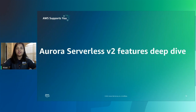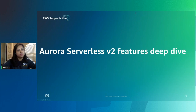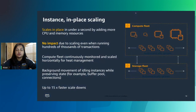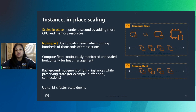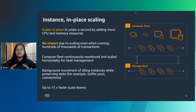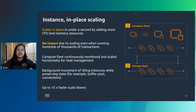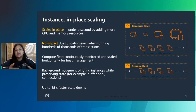Thank you, Harish. Today we will talk about some important features introduced in Serverless V2 compared to V1. One key customer ask was: how can we use this for production workloads? In V1, it was hard to find the scaling point when doing instance upscaling and downscaling. In V2, we introduced instance in-place scaling, where we achieve instance scaling through in-place scaling. This is a unique feature that auto-scales instances within milliseconds to meet the application workload.